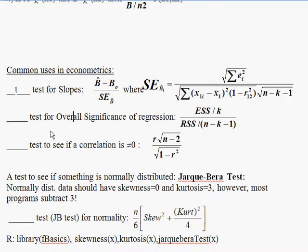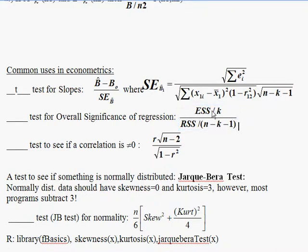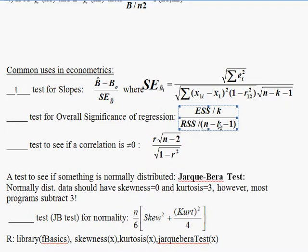Now let's look at the test for overall significance of a regression. We take the estimated sum of squares divided by k on top, and the residual sum of squares divided by n minus k minus 1 on the bottom — the degrees of freedom for a regression. When you sum squared things you should think chi-square. We have one chi-square on top and another on the bottom — the residual sum of squares — also adding up squared things divided by degrees of freedom.